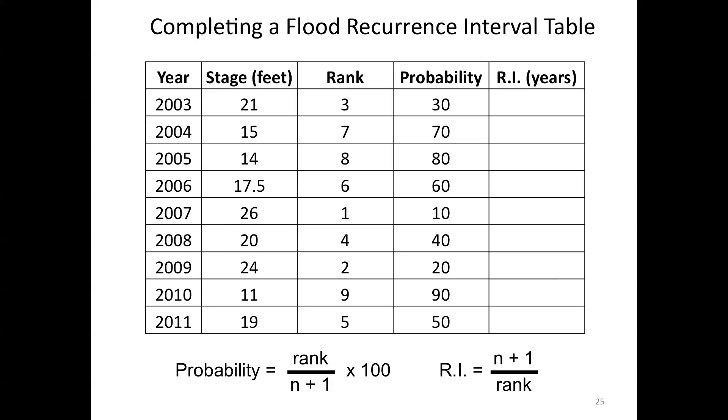So now we have the probabilities for the different size floods. And again, because we have nine years worth of data, the math works out conveniently in that the rank will be 3, the probability will be 30. If the rank is 1, then the probability is 10. But recurrence intervals typically don't work out so neat.